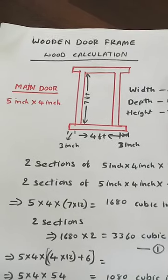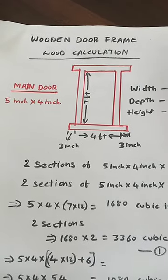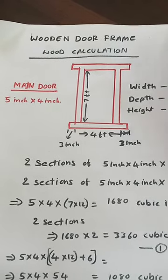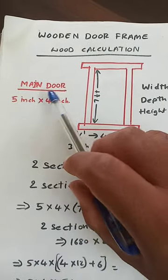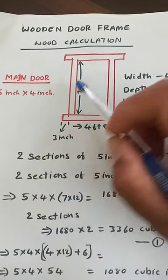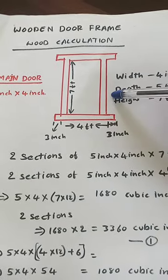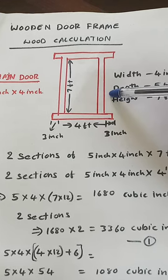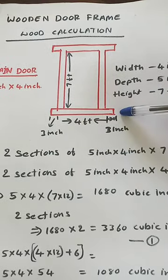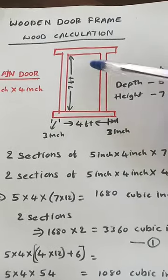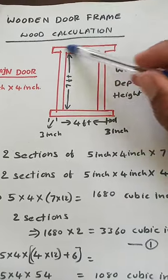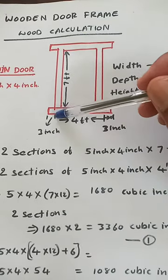Generally for the main doors, the section width and depth of the wood will be 5 inches by 4 inches. So the main door frame will be made up of a 5 inch by 4 inch section. For the main door we will generally have the gadapa also — the bottom portion is called gadapa. We will have 4 sections totally.